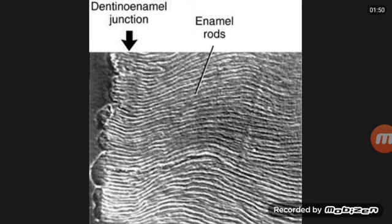These cross striations demarcate rod segments and become more visible by the action of mild acids. The arrangement of the rods is similar in the inner two-thirds of the crown.